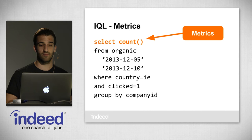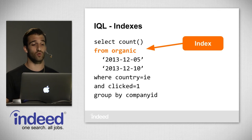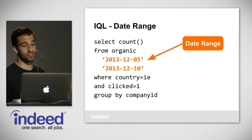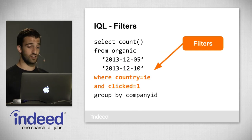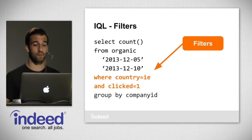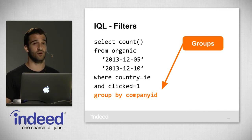An IQL query looks like this: first, 'select count' — count is a special metric which counts the number of documents. We then specify 'from organic' — the organic impressions index. Then a date range: December 5th through December 10th, 2013. We've got filters: where country is Ireland and clicked equals one. And finally the groups: grouping by company ID. This is basically the first pivot we did in the organic dataset — looking at companies who received clicks in Ireland.